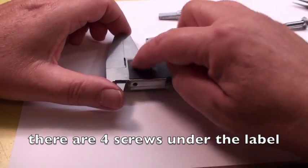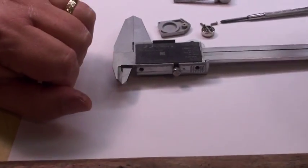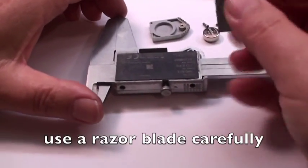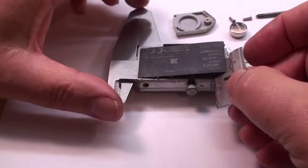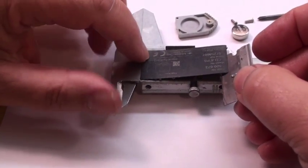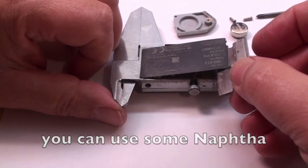Now we have to get at the four screws that are underneath this identification plate down here. A good way to do it is to use a razor blade. This usually comes off quite nicely. If it doesn't, use a little bit of solvent like alcohol.